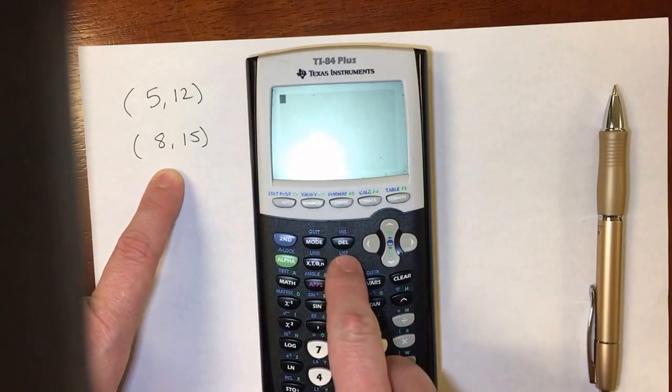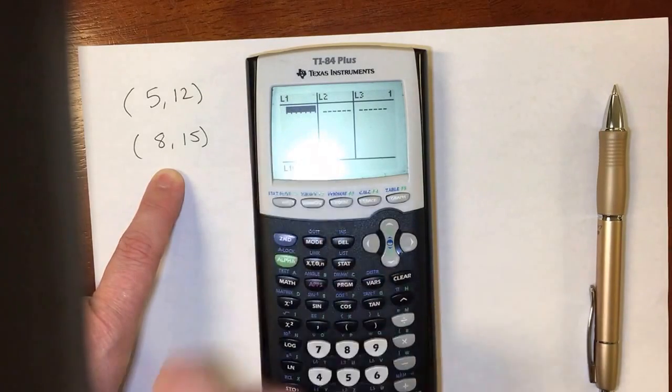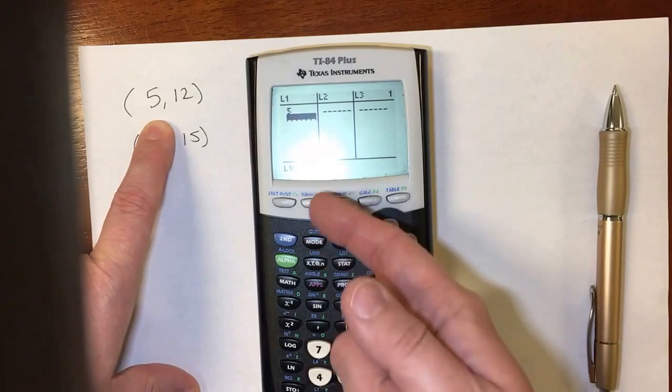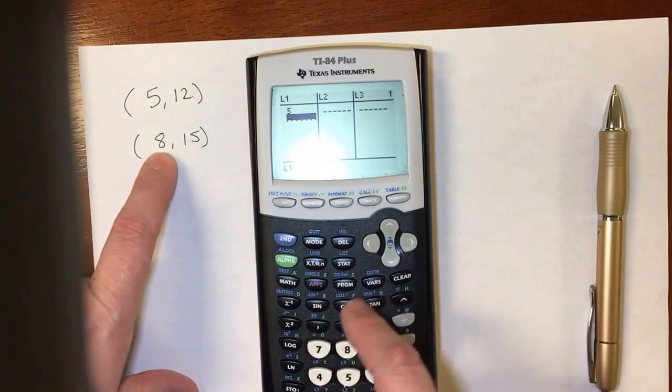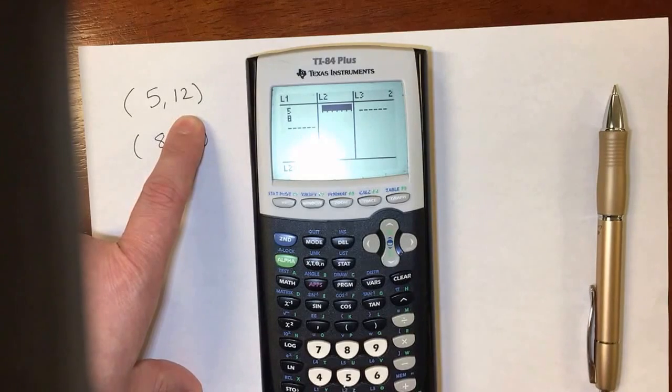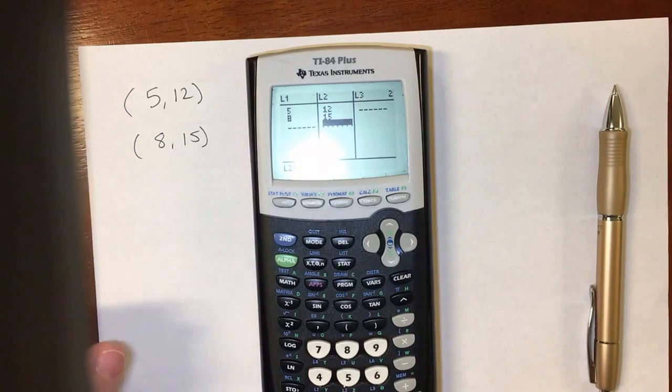So I'm going to go to stat, and the first one is edit, and I'm going to put these numbers in. So I have a value of 5 for x, you have to hit enter for it to move, and then my next x is 8. And then I arrow over, and I have 12 and 15. So I'm going to put those two ordered pairs in.